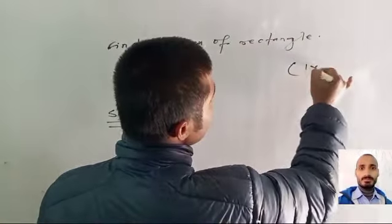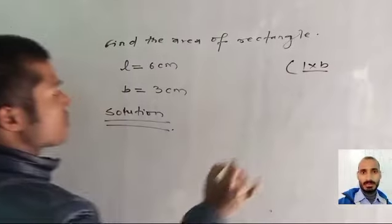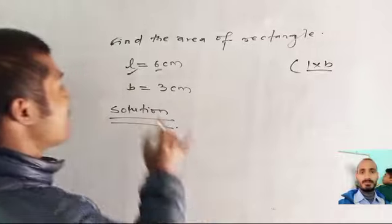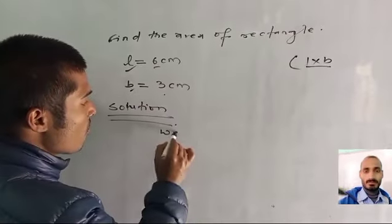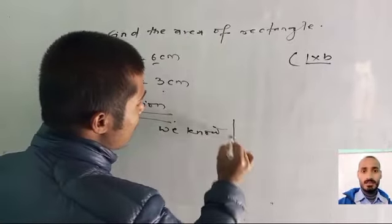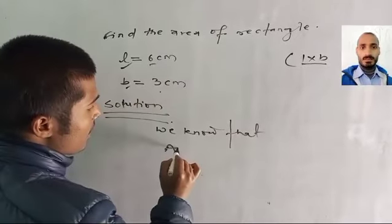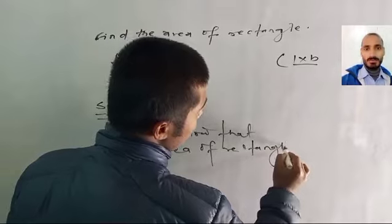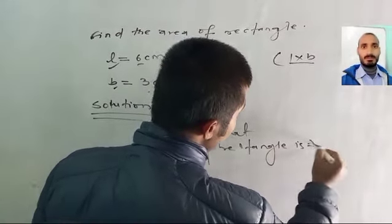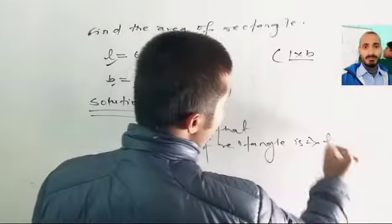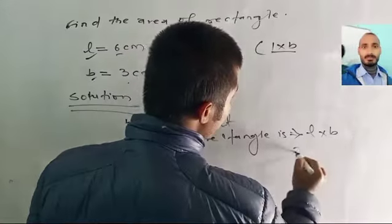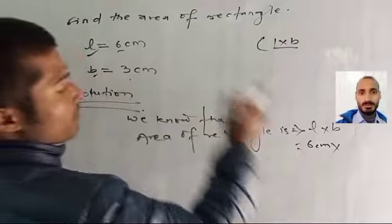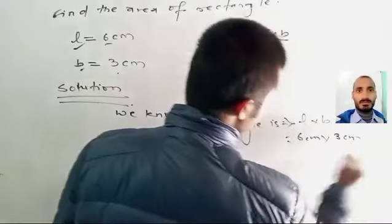The formula is L into B. We know that the area of rectangle is L into B, where length is equal to 6 cm and breadth is equal to 3 cm.